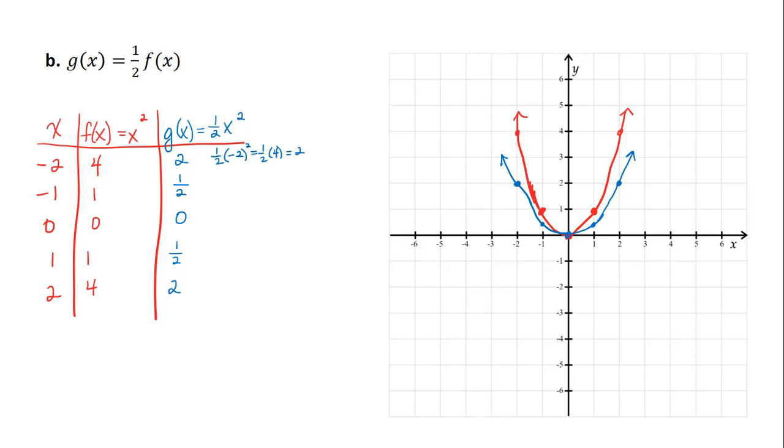And so we say that this transformation, we say that g, the graph of g, is the graph of f vertically shrunk by a factor of 1 half. So again, an outside multiplier. It's impacting the y values because it's the outside of the function.